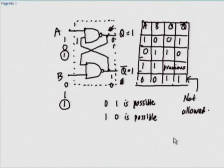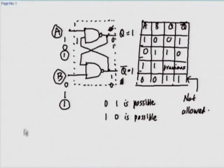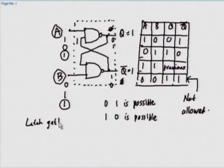What about A equal to 0, B equal to 0? If both are 0, then Q will become 1 and Q bar will also become 1. This state we do not allow. Why? First, Q and Q bar are not complementary - that is one reason. But there is another very important reason we will come to a little later.